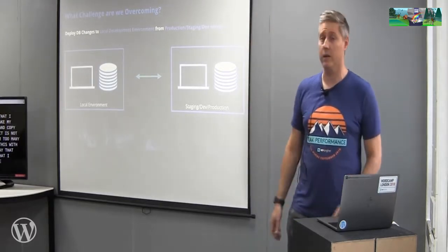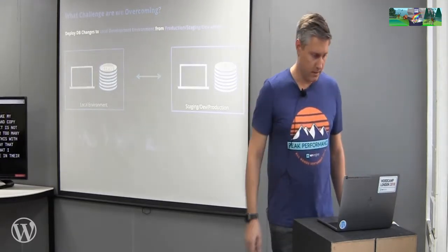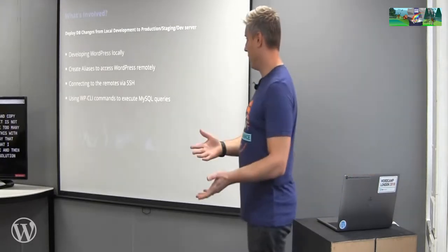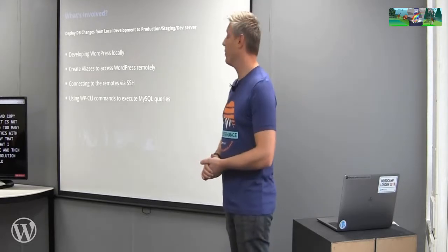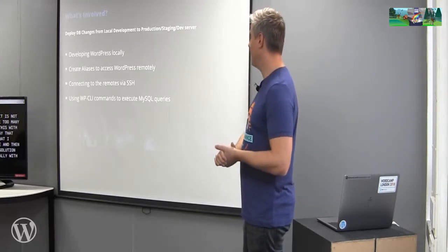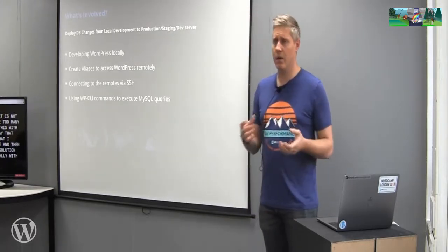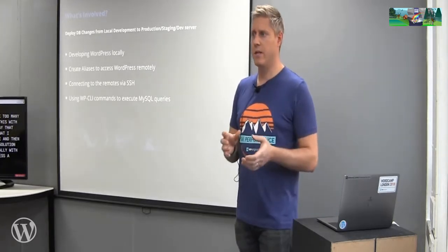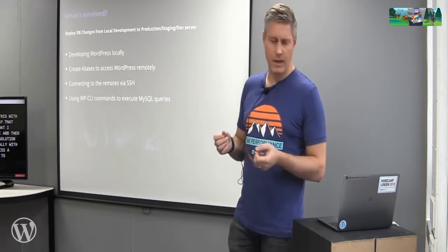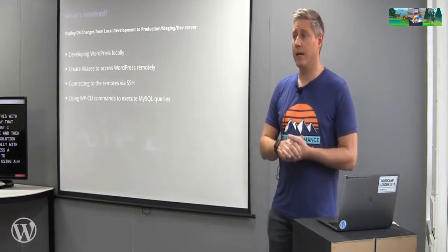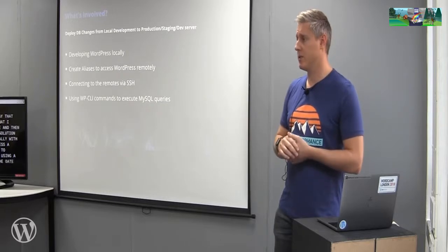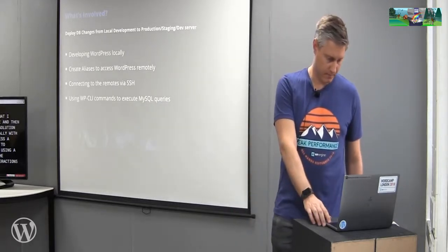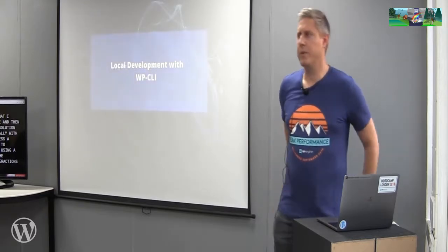It's not a difficult problem to solve — there are many ways to do this — but I wanted to do it with WP CLI in a way that was repeatable, something I could script out, do once, and then run on a regular basis. The solution involves developing locally with WordPress, creating aliases to access a WordPress site remotely using SSH, and using WP CLI commands to get the database and do database interactions. How many people here are developers?